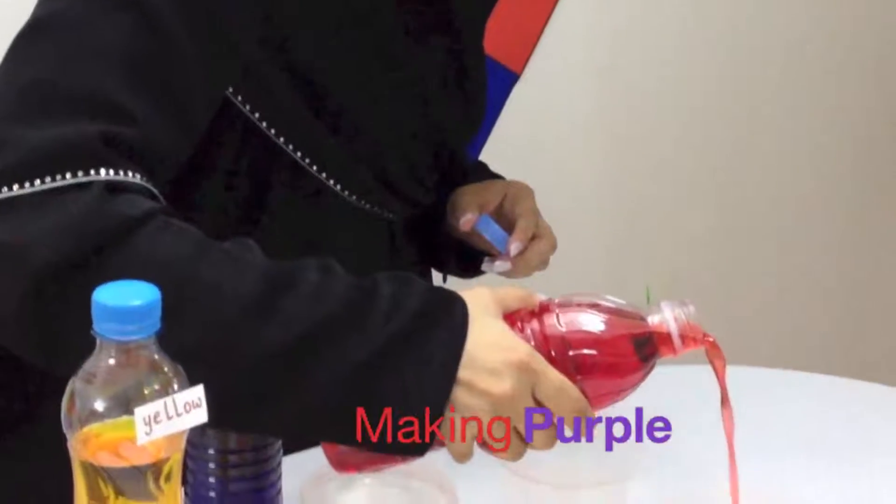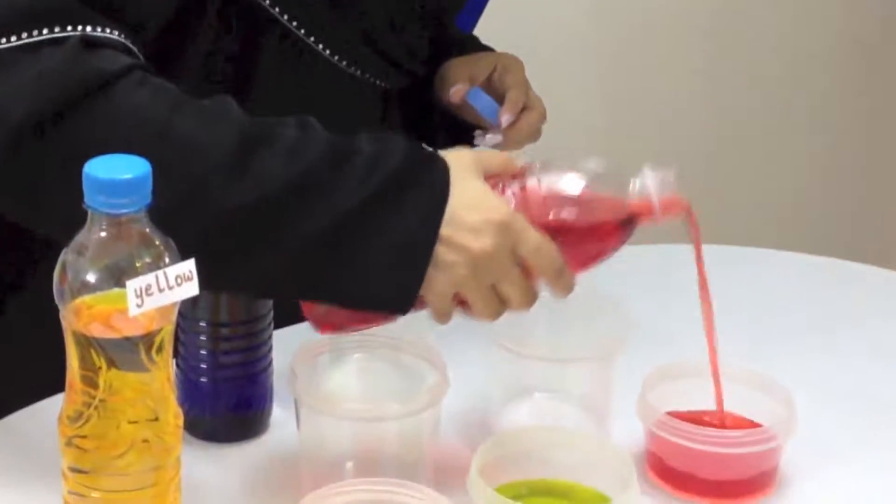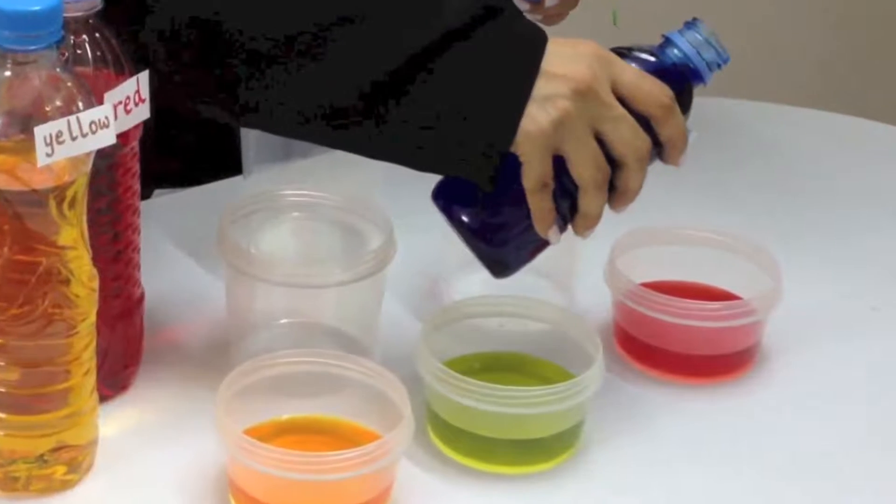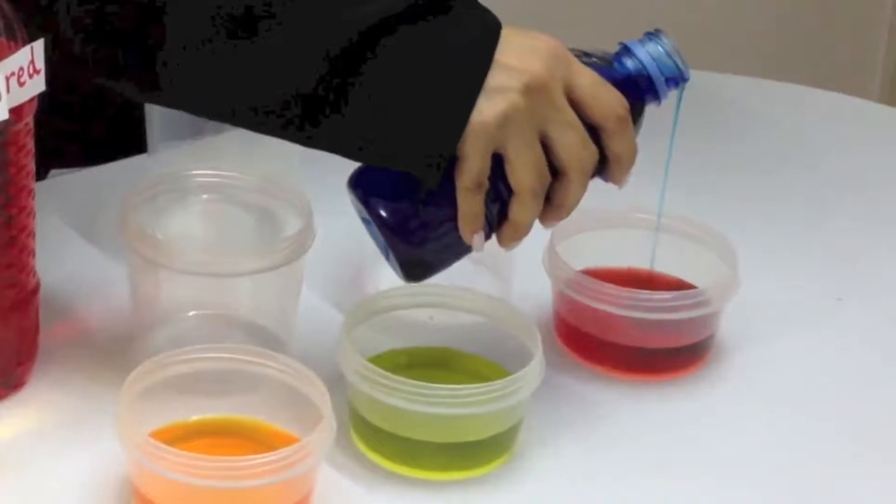I'll first pour red to make purple and then add blue to it. Add blue in small quantities to make sure you get the right shade of purple.